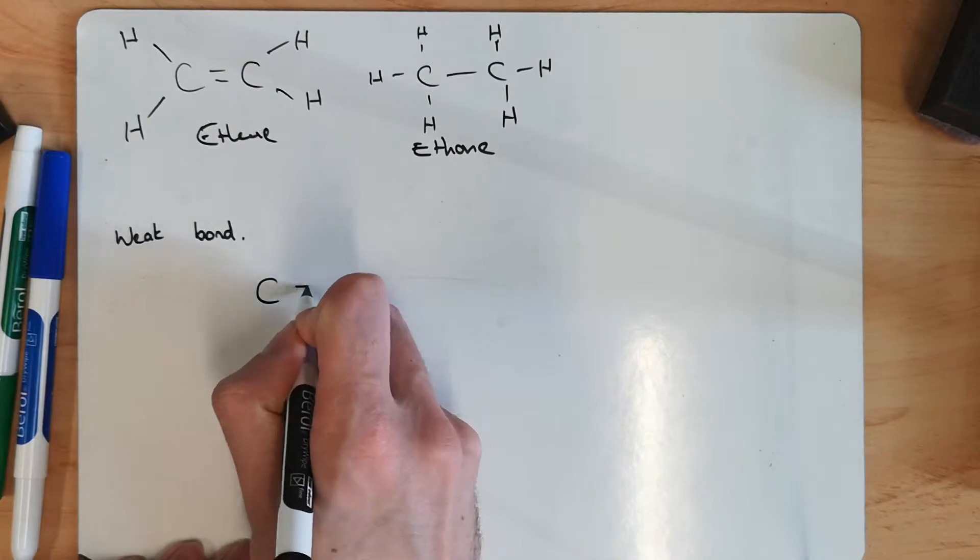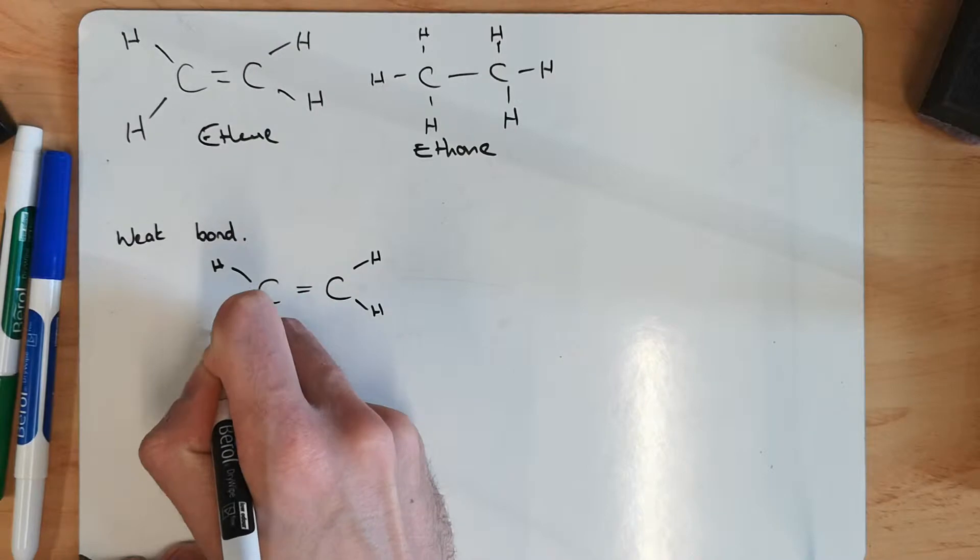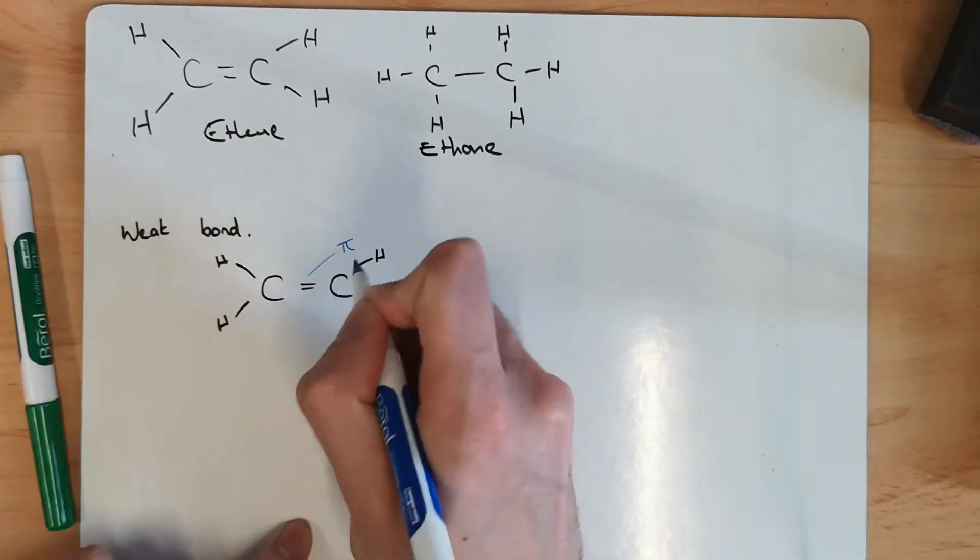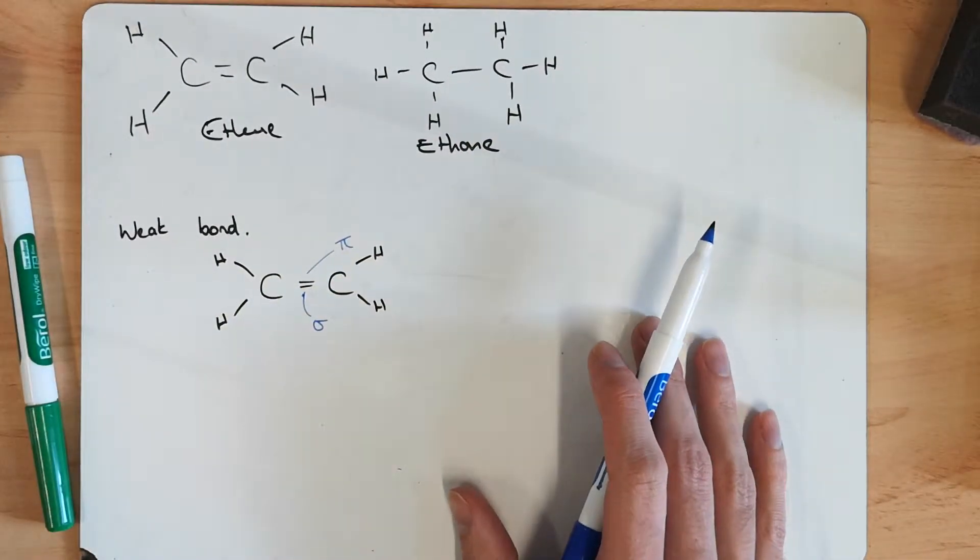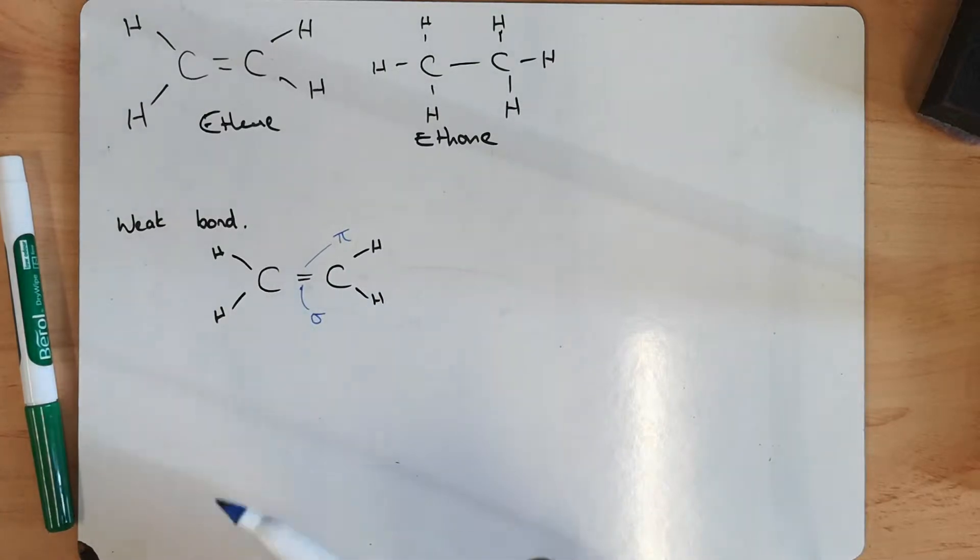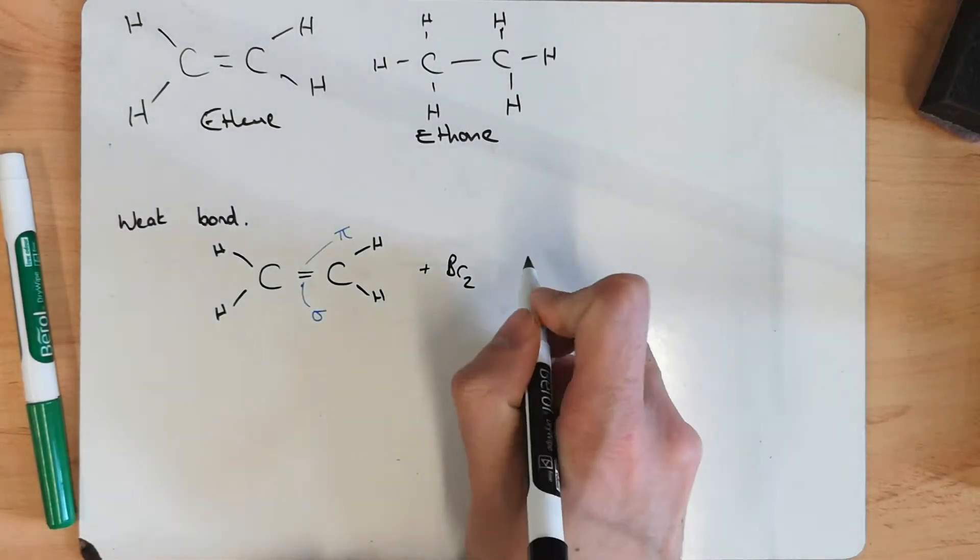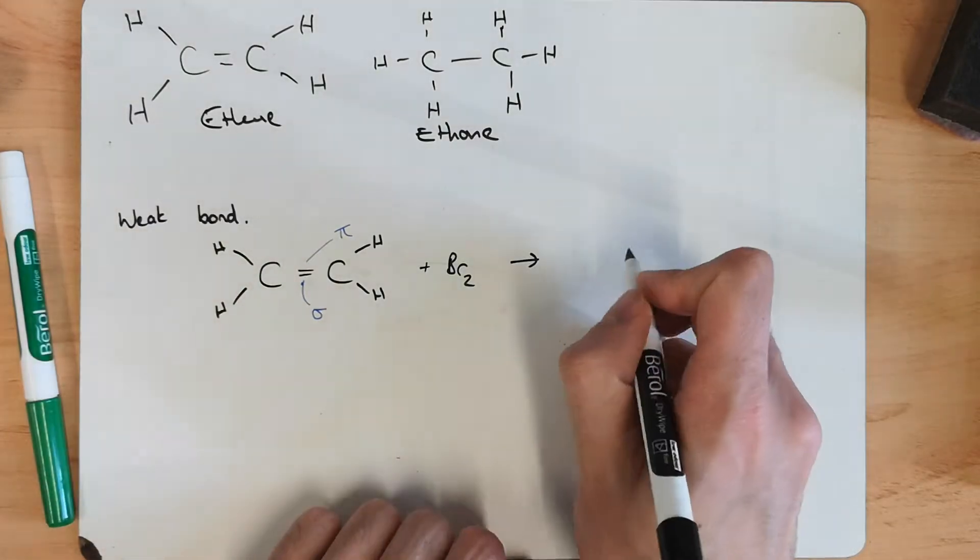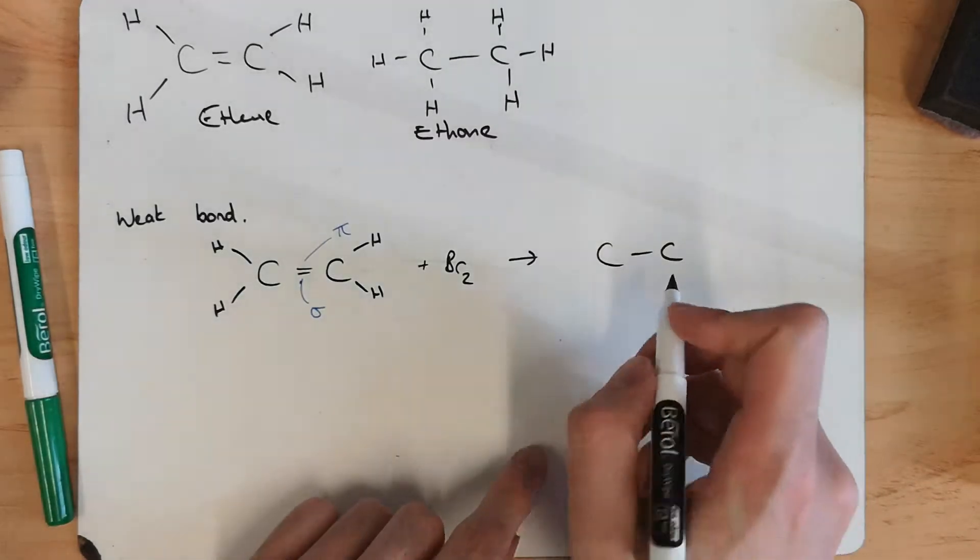Ethene, or alkenes, have got this double bond that consists of a pi bond and a sigma bond, whereas alkanes are all just sigma bonds. And that pi bond is very weak, so it breaks very easily. When something comes along that it wants to react with, let's say bromine, the bond breaks in the center very easily, leaving it as just a single bond and that strong sigma bond.